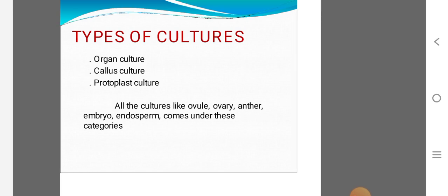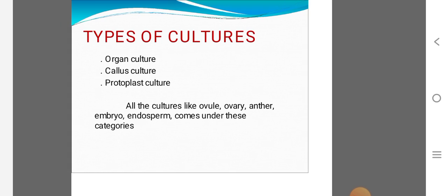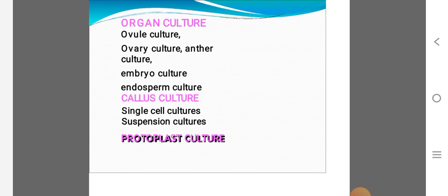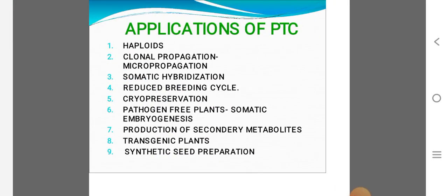Protoplasts are the naked cells. All the cultures like ovule, pollen, anther, embryo, endosperm come under these categories: organ culture, callus culture, protoplast culture.